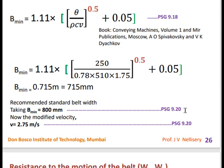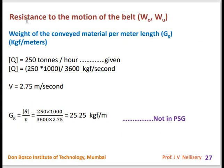The standard belt width for B_min = 715 mm is 800 mm (from PSG 9.20), with corresponding velocity 2.75 m/s. We calculated two candidate widths — 500 mm and 800 mm — and select 800 mm as the final belt width.